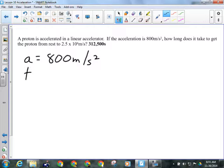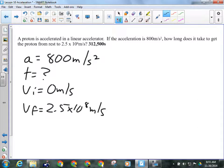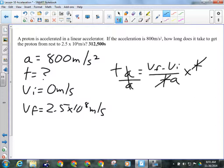How long does it take? That means I'm looking for T. The proton to get from rest, so VI is 0 meters per second, to 2.5 times 10 to the 8 meters per second. So I'm looking for T. So A equals VF minus VI over T. If I want to get T by itself, I multiply both sides by T. It comes over here. Then I divide both sides by A, and I'm left with this. VF minus VI over A.